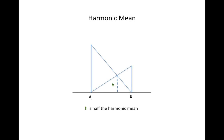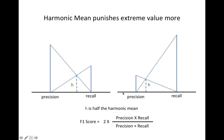What is the harmonic mean? Let's say we have A this amount and B this amount, and we draw a line across, and you get H — which is exactly half of the harmonic mean. So if precision is A and recall is B, even if recall is very high, H is pulled toward the lower value. That means the harmonic mean punishes extreme values more, so if we have imbalanced data and use the harmonic mean, it punishes extreme values and finds the harmonic average.